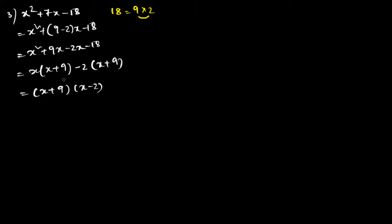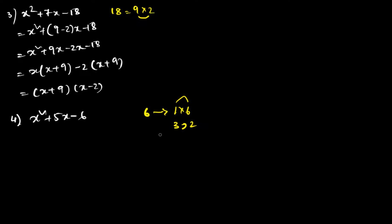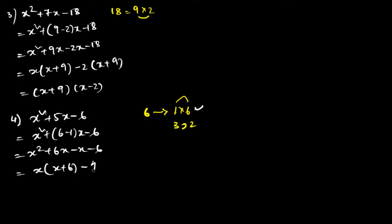The fourth one is x² + 5x − 6. I need 5, and 6 can be factorized as 1 × 6, which gives 6 − 1 = 5. Another option is 3 and 2, but 3 + 2 = 5 won't work here with the signs. So using 6 and 1, the answer is (x + 6)(x − 1).